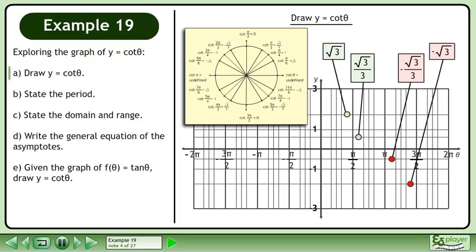We have lines representing root 3, root 3 over 3, negative root 3 over 3, and negative root 3.